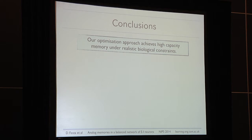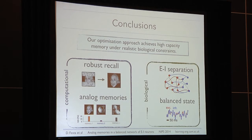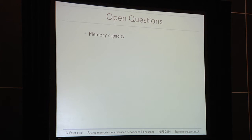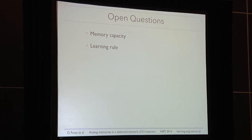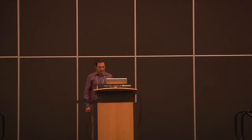To conclude, we introduced an optimization approach that achieves high-capacity memory under realistic biological constraints, successfully embedding all the desired features. However, there are still open questions. We don't have a way to directly address memory capacity since we are simply minimizing a cost function. The learning is implicit in this reduction, so we lack a clear learning rule and don't know the mapping between memories and synaptic weights. Finally, this is a continuous rate model, so we do not have a spiking network implementation.